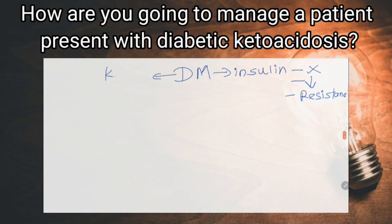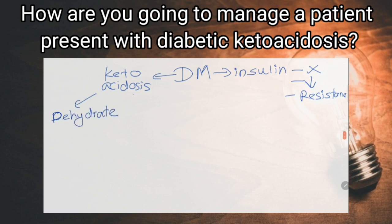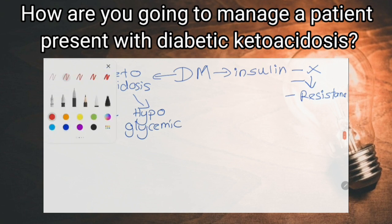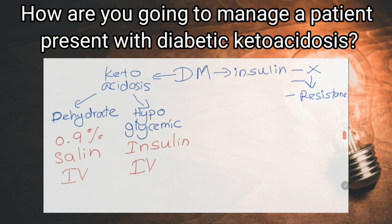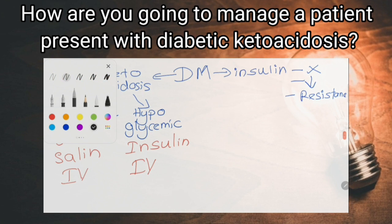How are you going to manage a patient presenting with diabetic ketoacidosis? I want to know the basis of those therapies. As these patients are dehydrated, 0.9% saline is given intravenously to expand the intravascular and extravascular volumes and to restore renal perfusion, and to correct the water and electrolyte deficits. To correct the hyperglycemia, insulin is given intravenously with close monitoring of blood glucose level.